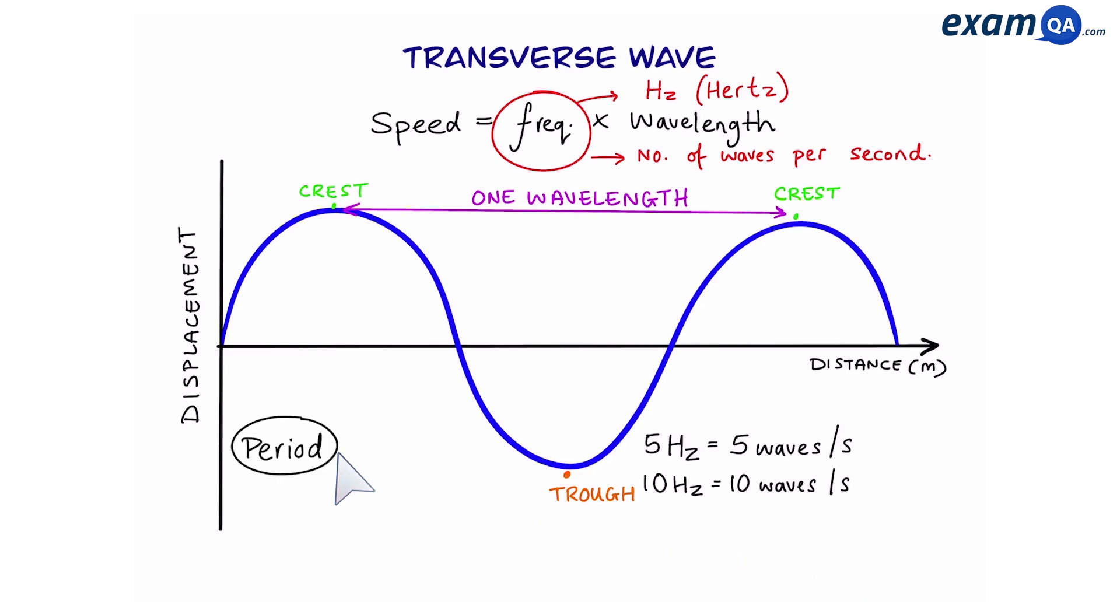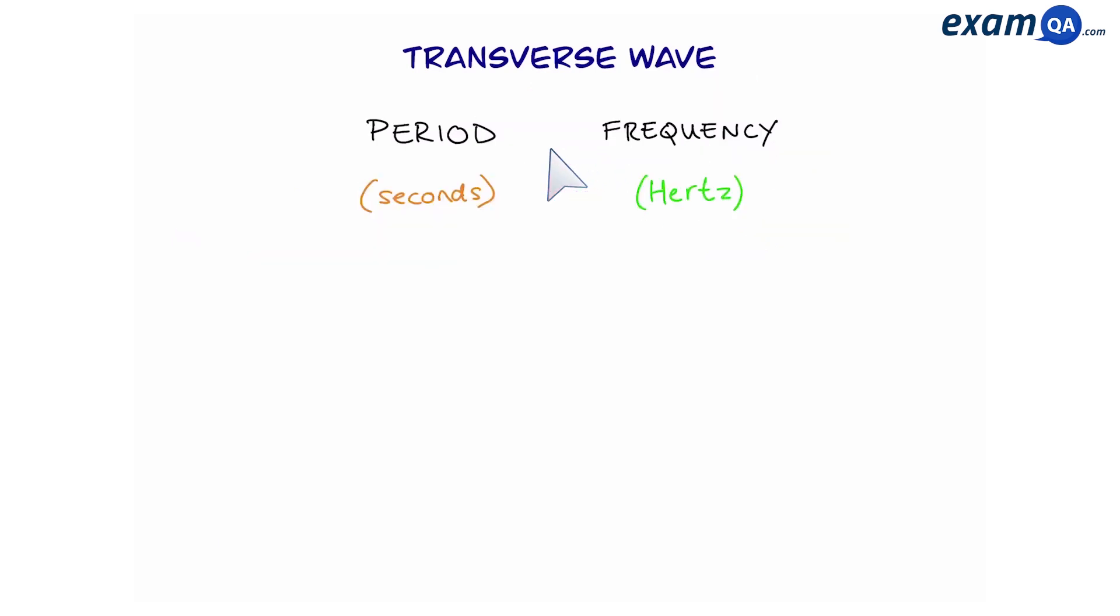Now the next thing about waves is that we need to know period. Period is simply the time it takes for one complete wave, or in other words the time it takes for the wave to get from here to here. And we're going to work out period by looking at frequency. Okay, so period is measured in seconds and frequency is measured in hertz. Now the interesting thing about these two is that if you know one, automatically you can work out the other. For example, if I know period, I can work out frequency by doing 1 divided by period. And equally, frequency to period is the same way. 1 divided by frequency gives me period.